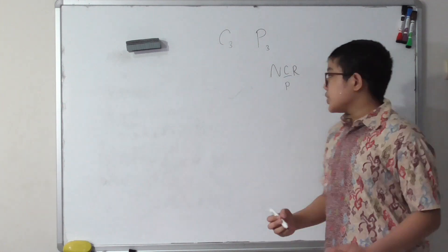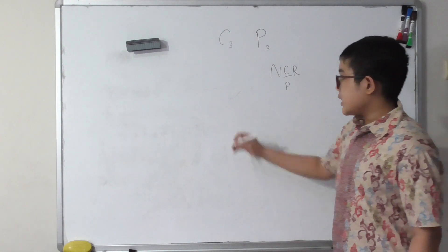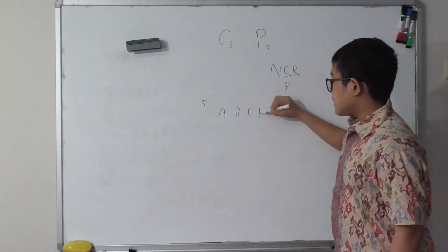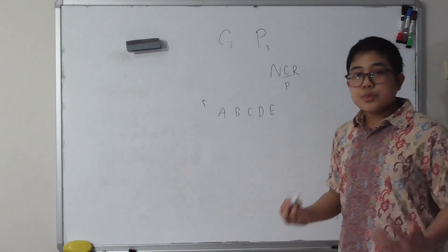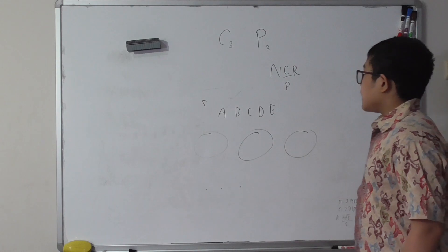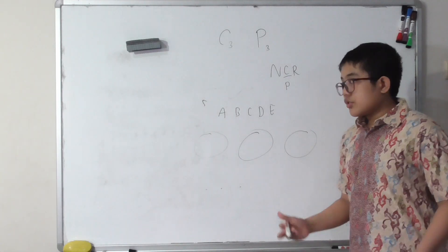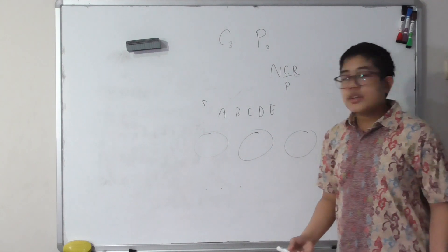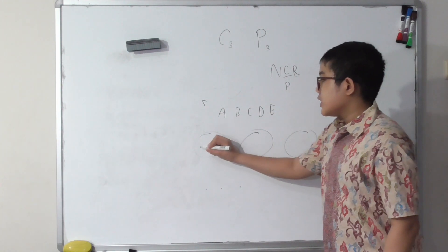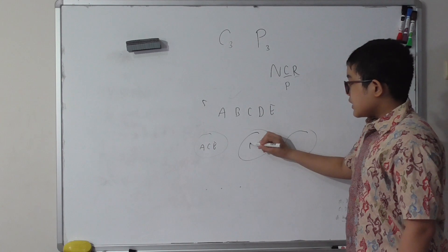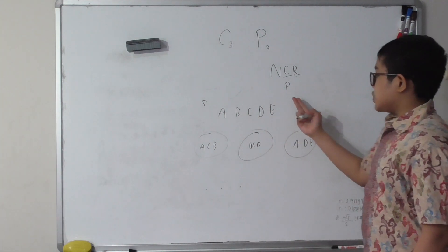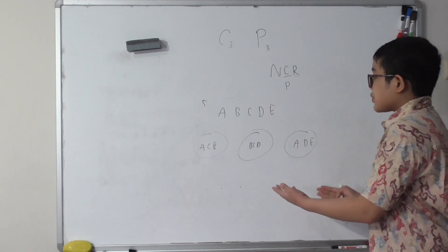For combination, you're given an amount of objects — let's say five alphabets: A, B, C, D, and E — and then we're asked to group them with a certain number of members. For example, within these five alphabets we can group them each with three members: A, C, and E; or B, C, D; or A, D, E and so on. Combination is asking us how many of these groups are possible.